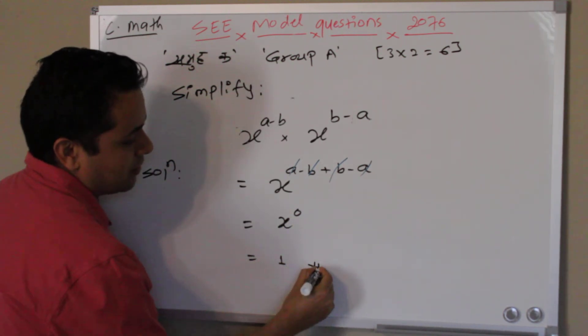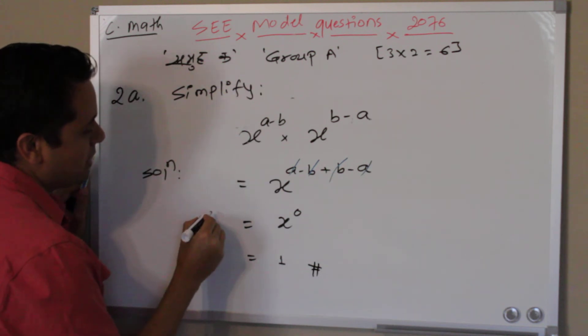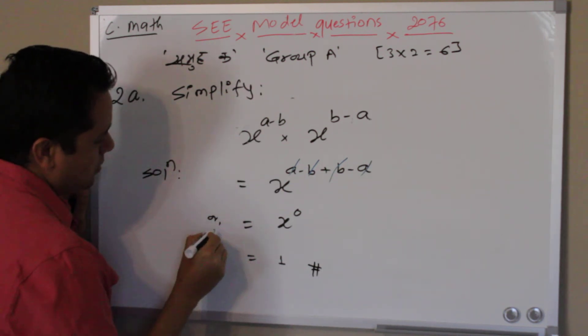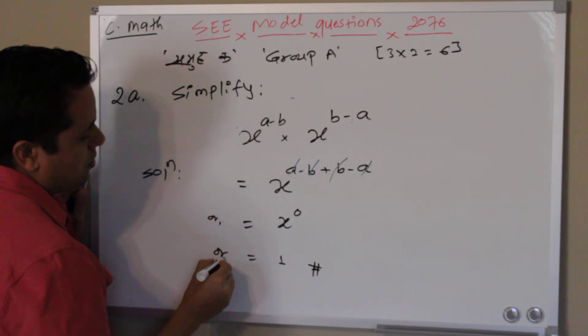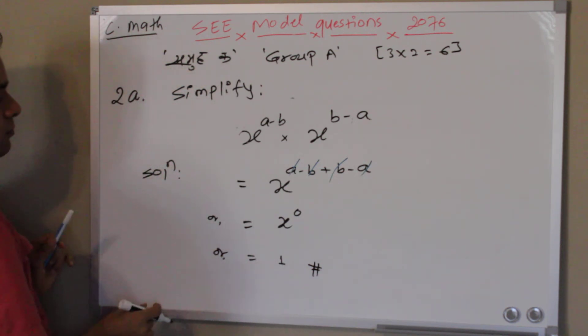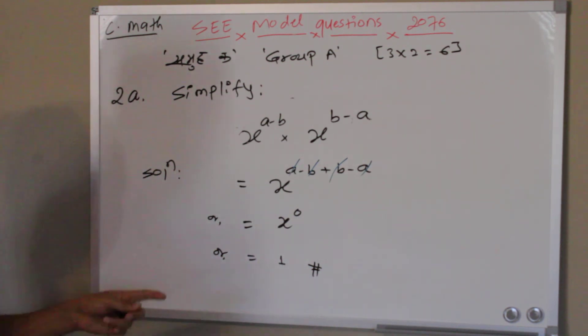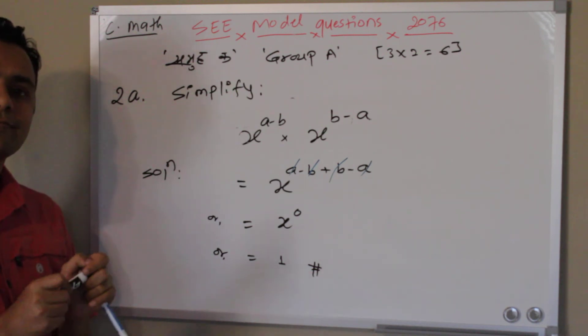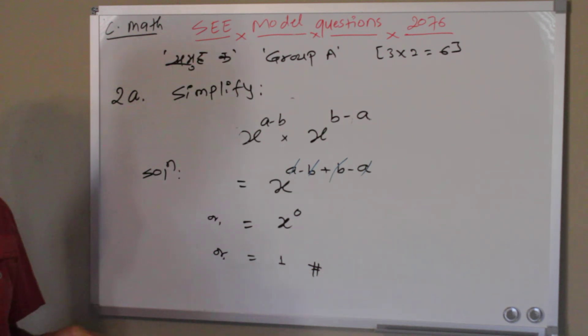So this is your answer. You may write down here 'or' or 'therefore'. So this is your answer. 1 is your answer. That's all. Thank you.